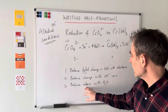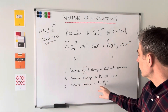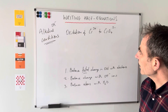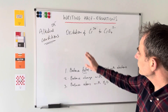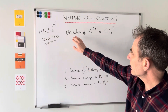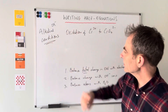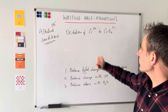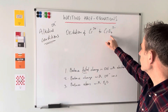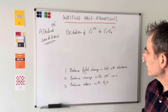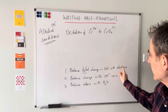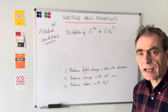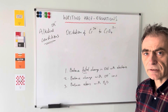One for you to try: write the half equation in alkaline conditions for the oxidation of Cr3 plus to CrO4 2 minus. I've left the steps on screen. Pause the video, have a go, and then play on when you're ready for the answers.